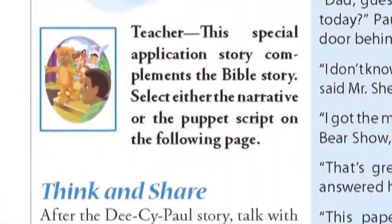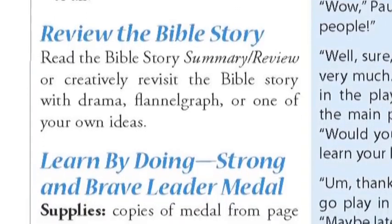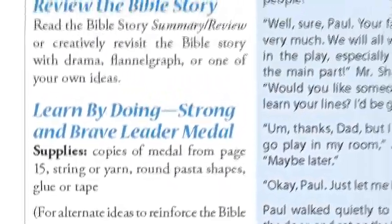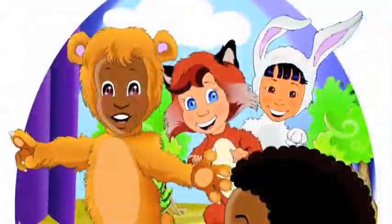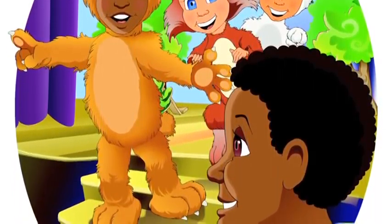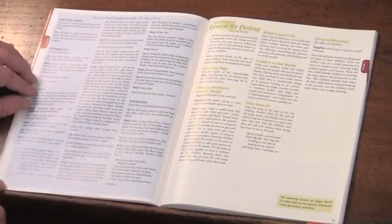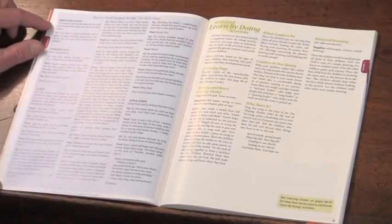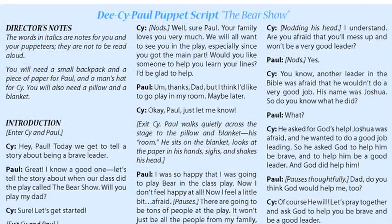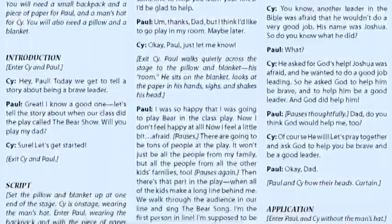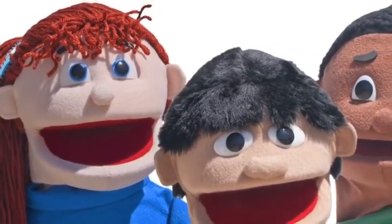Disciple Time is basically where we get kids to think about what we've been talking about. There will be an opportunity to review the story and some learn-by-doing activities. The next thing is what we call the Disciple Story, and there is a second teaching picture for every single lesson — the Disci and Paul story — with the story on the back of that picture. If you don't use puppets, the puppet script is printed out for you. My recommendation is to enlist some older kids who want to make puppet time their ministry to preschoolers. Give them the scripts in advance, let them read them, do a quick rehearsal on Sunday morning, and they will perform the puppet script for you.